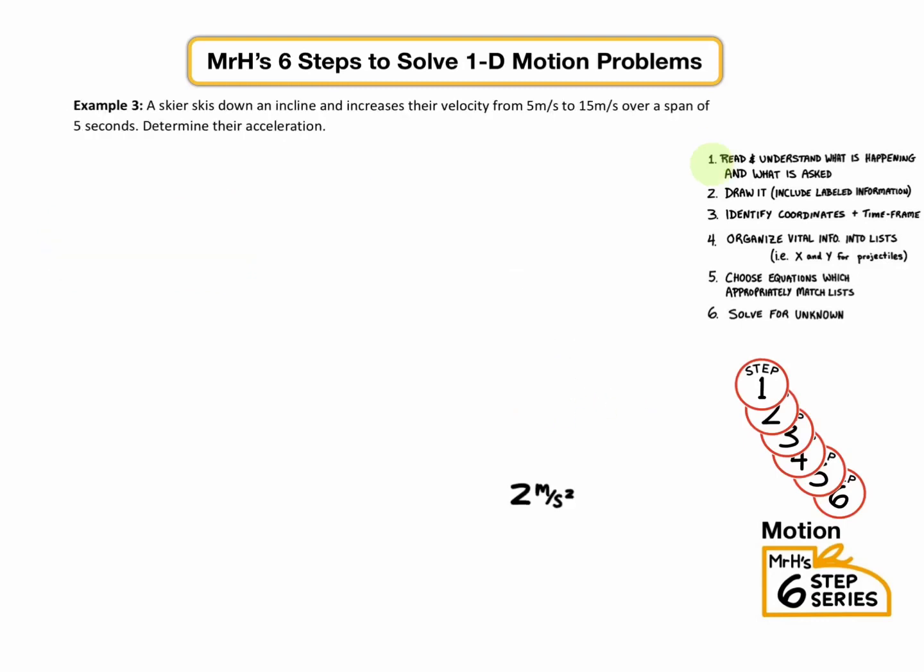All right, let's do another one. Example three, a skier skis down an incline and increase their velocity from five meters per second to 15 meters per second over the span of five seconds. Determine their acceleration. Well, we know that we're done with step one when we have a symbol with a question mark. They asked for acceleration, so we're going to say A equals question mark.